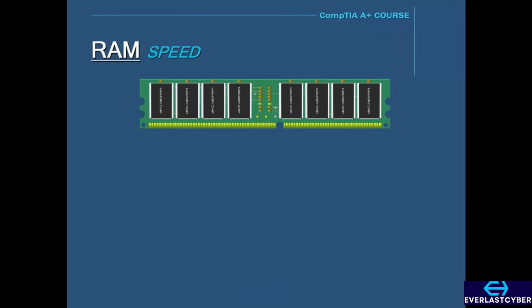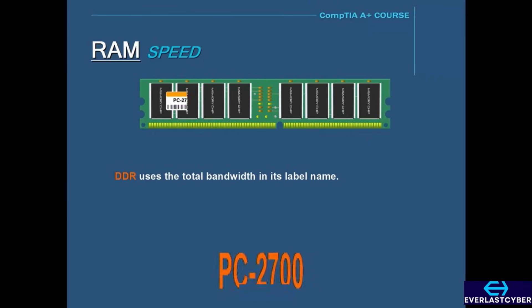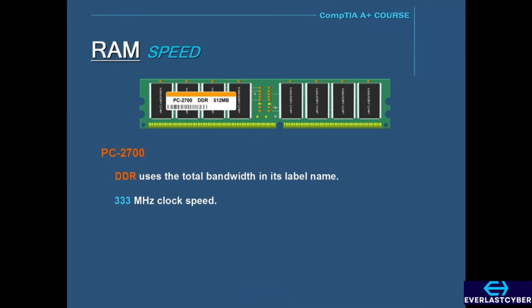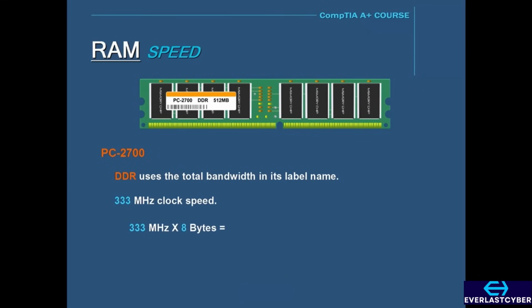DDR is also labeled differently from non-DDR RAM. Instead of including a clock speed in its name, like PC133 where 133 equals the clock speed, DDR uses the total bandwidth instead. For instance, a DDR DIMM labeled PC2700 — the 2700 is not the clock speed, but it is the actual total bandwidth. The clock speed for PC2700 is 333 MHz, so 333 MHz times 8 bytes is rounded off to 2700 MB per second, which is where we get the name PC2700.